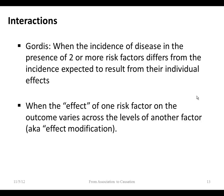Another type of relationship where our outcome varies by different levels of another factor is interactions. Gordas describes it as when the incidence of disease in the presence of two or more risk factors differs from what's expected from their individual effects — basically, the effects are more than just the sum of the two parts, or in some cases the product. Another way to think of it: when the effect of one risk factor on outcomes varies across levels of another factor. A common name for this is effect modification.